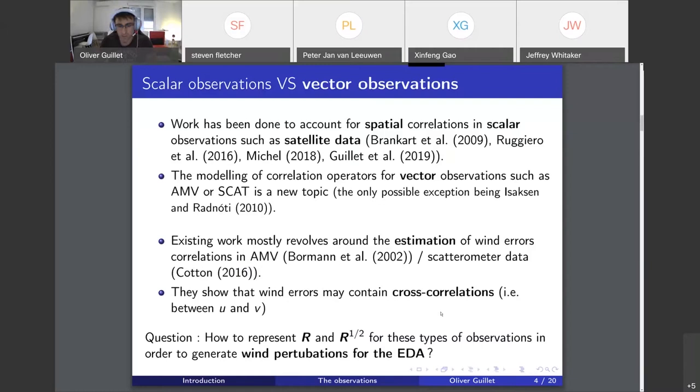There's some work to account for spatial correlation in scalar observations such as satellite data. The modeling of correlation operators for vector observations such as AMV or scatterometer data is a pretty new topic. The only possible exception is maybe a paper from Isaksen and Radnoti in 2010.